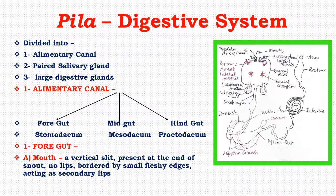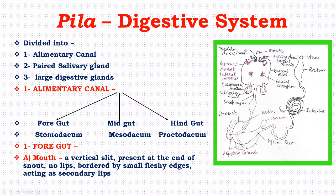The digestive system of Pyla consists of three parts: a tubular alimentary canal, paired salivary glands, and a large digestive gland.